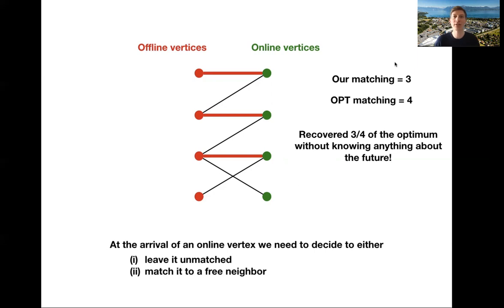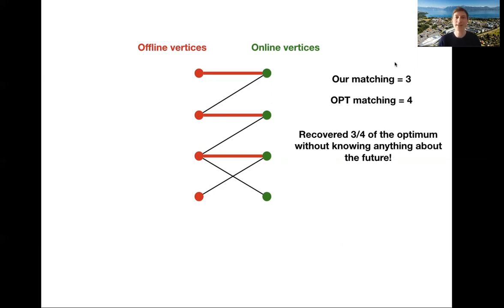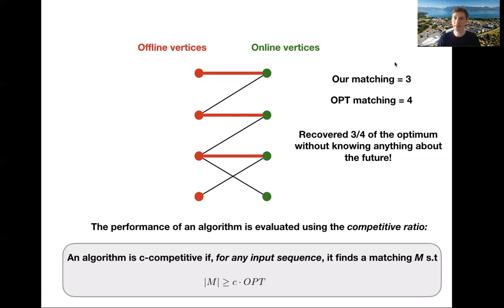Of course, we are not only interested in this instance. So we would like an algorithm that is guaranteed to work well for any instance. And that's called the competitive ratio of the algorithm. So an algorithm is C-competitive if for any input sequence it finds a matching M, such that the size of the matching is at least C times the optimum. We recovered 3 fourths of the optimal in this instance, but we would like an algorithm that is C-competitive for a large C as possible for any input sequence.